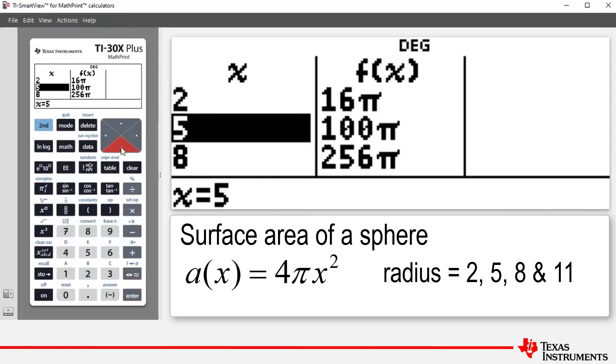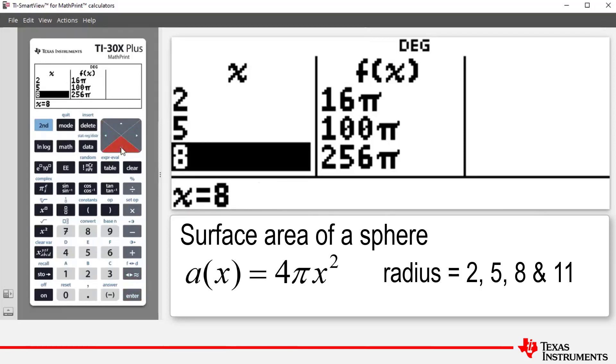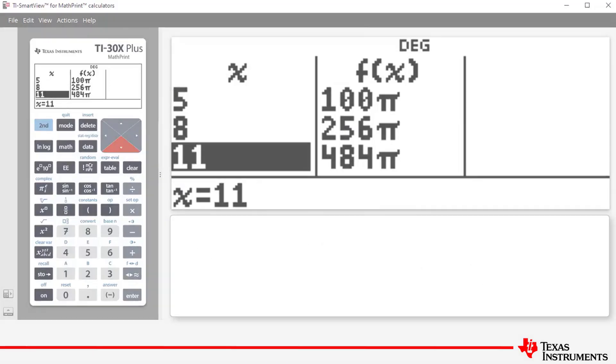To obtain other values in the table go back here, scroll down to 5, scroll down to 8, scroll down to 11. So that's showing you the surface area for the four spheres that we wished to calculate.